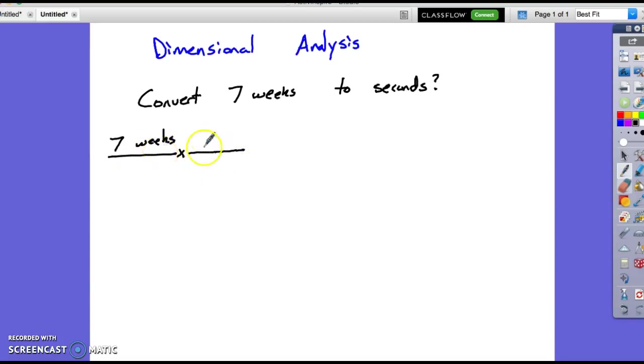And I don't know weeks to seconds but I do know this. That in one day, not one day, there are seven days in one week. I forgot my one. So now my weeks will cross off. I know there's 24 hours in a day. So in one day, there's 24 hours. I know that in one hour, there is 60 minutes. And I know that in one minute, there are 60 seconds.